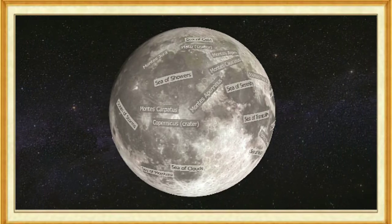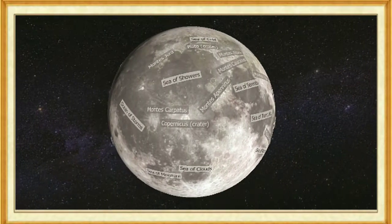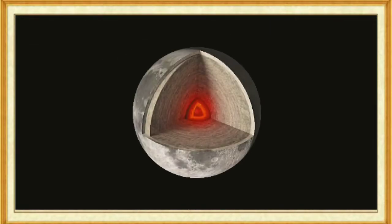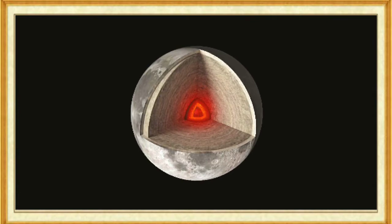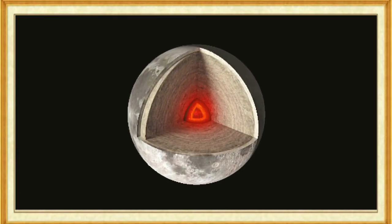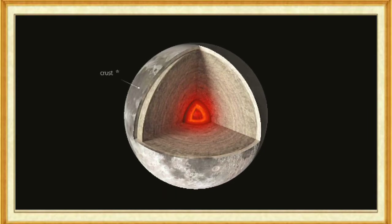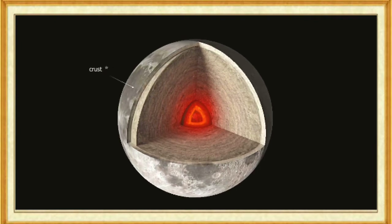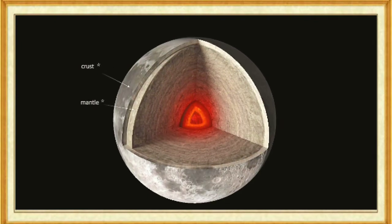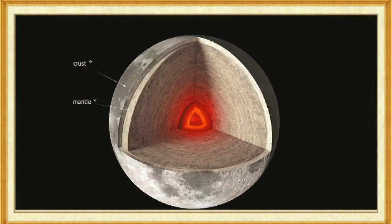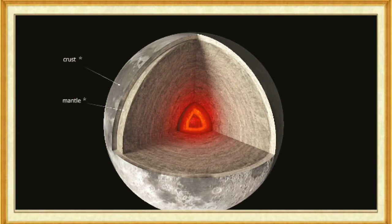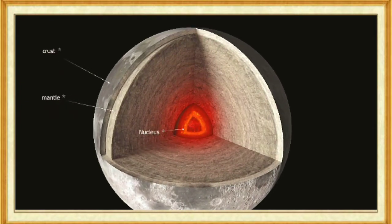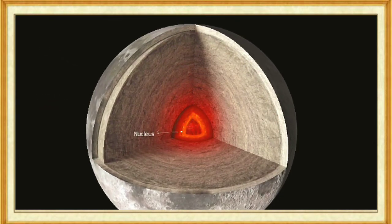So far, the Moon is the only celestial body, apart from the Earth, where man has ever set foot. The internal structure of the Moon is similar to that of Earth. It is composed of a crust, a mantle, and a core. The solid crust is twenty to sixty kilometers thick and is made up of volcanic rock. The upper mantle is also solid, with a partly molten layer below. The mantle has a thickness of 1,200 kilometers. The outer core is about 300 to 350 kilometers thick and is composed of molten substances, while the inner core is solid and has a diameter of about 150 kilometers.